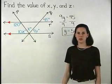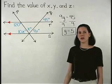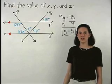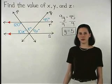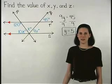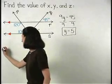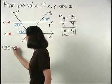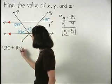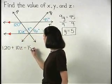And since we know that if two parallel lines are cut by a transversal, then same side interior angles are supplementary, we can set up the equation 120 plus 10z equals 180.